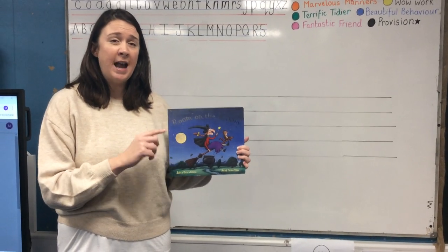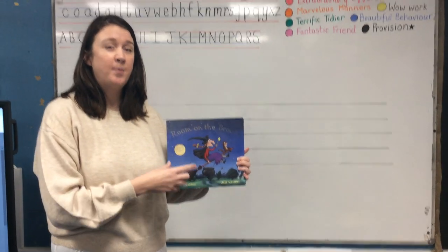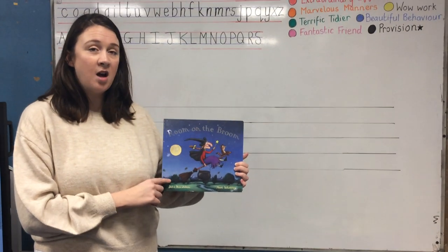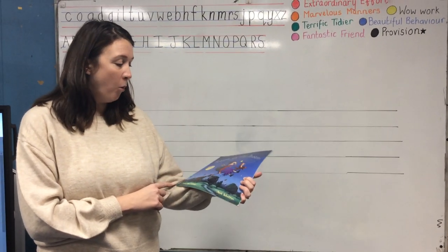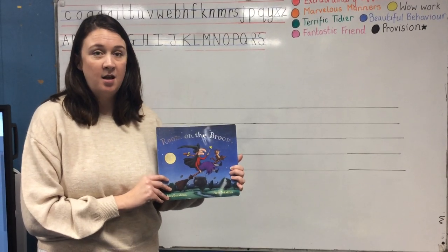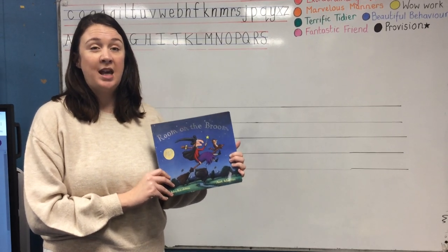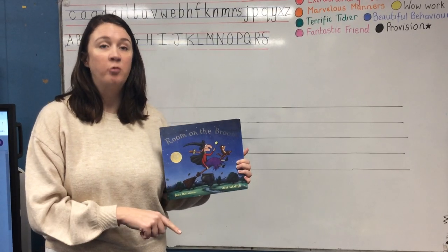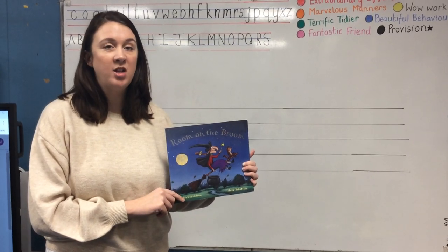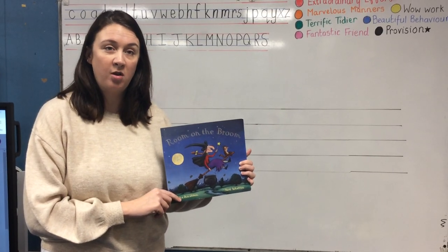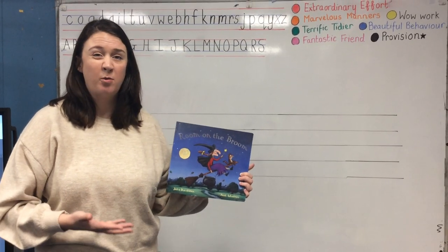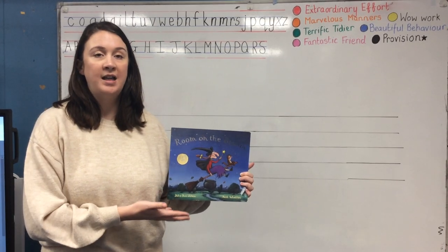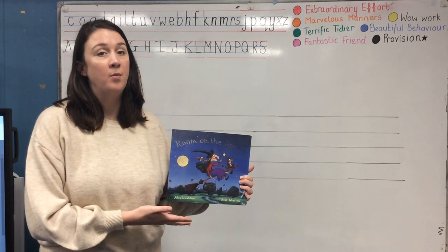Today we're going to write the next part of the story, and we're going to do this over two days. We're going to start by thinking about what the witch loses, because in the story she keeps losing different things and she has to fly down. She says, 'Down!' cried the witch, and they flew to the ground, and then they search for whatever she's lost and the character comes out and gives it to her and then joins on the broom.